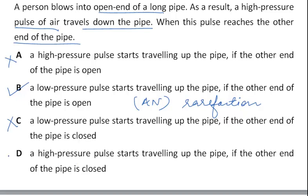Node will be formed or we can call it as compression. High pressure pulse starts travelling up the pipe if the other end of the pipe is closed. Now this is correct. High pressure means compression. So option B and option D are correct.